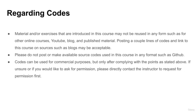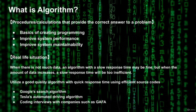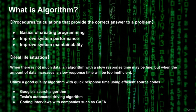Now that we've covered the course enrollment basics, let's get to the actual content. First, let's discuss briefly what an algorithm is. An algorithm is a process or a set of procedures and calculations that provide the correct answer to a particular problem. Algorithm can be used to create the foundation for programming, can improve system performance, and can improve system maintainability. When there's not much data to process, an algorithm with a slow response time may be okay. But if there is a lot of data, speed becomes important — you'll need a good quality algorithm with quick response time and source code focusing on efficiency.